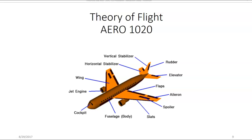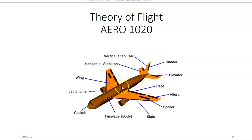You'll get to know this illustration. It is a transport aircraft, and the parts of the airplane are labeled, starting with the fuselage. The fuselage is the body of the aircraft, and the fuselage is where all the other parts are attached or are contained.